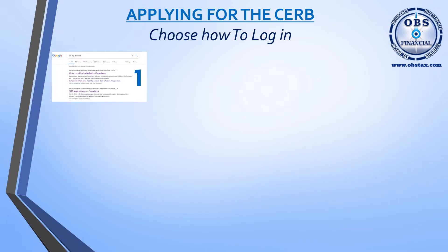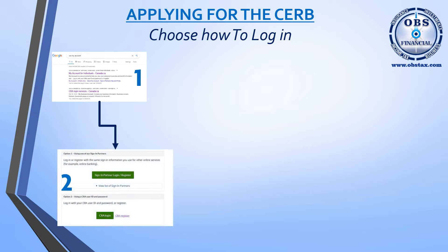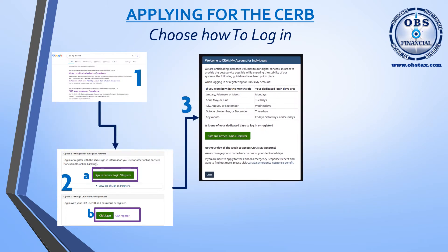Let's start by talking about how to log in. First, go to a web browser and Google search 'My Account for CRA'. Once you get there, click on the link and that'll get you to the login page. There are two ways to log in: you can use a sign-in partner, which would be one of your banks if your bank has been selected to be a sign-in partner. If your bank is not one of them, you can also click on the CRA login. Once you click on either one of those, you will go to the welcome screen.